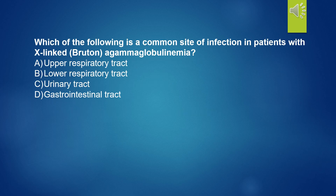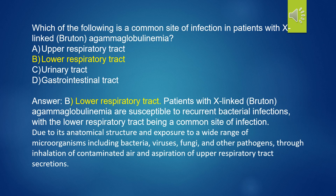Which of the following is a common site of infection in patients with XLA? A. Upper respiratory tract. B. Lower respiratory tract. C. Urinary tract. D. Gastrointestinal tract. Answer: B, lower respiratory tract. Patients with XLA are susceptible to recurrent bacterial infections, with the lower respiratory tract being a common site due to its anatomical structure and exposure to a wide range of microorganisms including bacteria, viruses, fungi, and other pathogens through inhalation of contaminated air and aspiration of upper respiratory tract secretions.